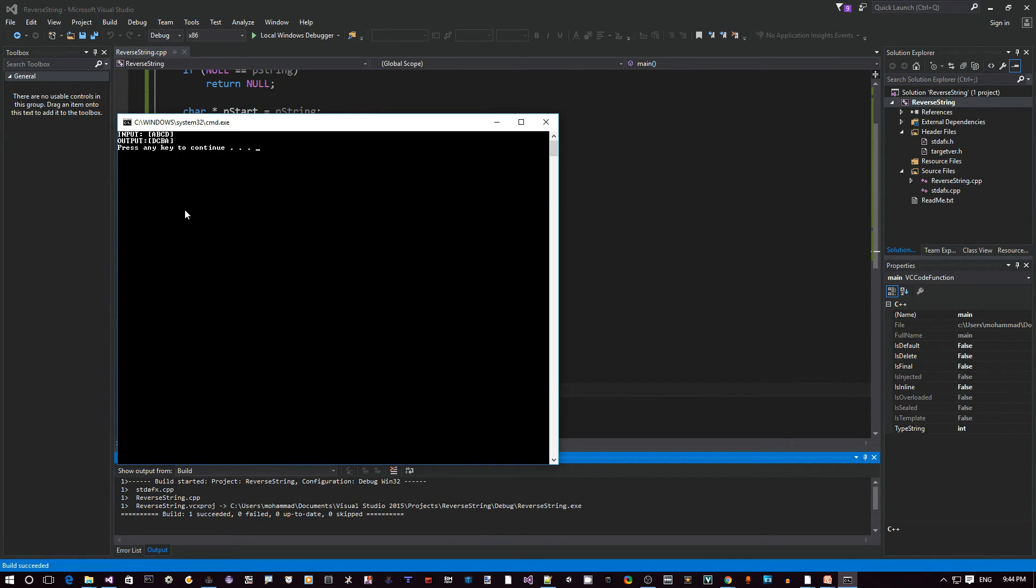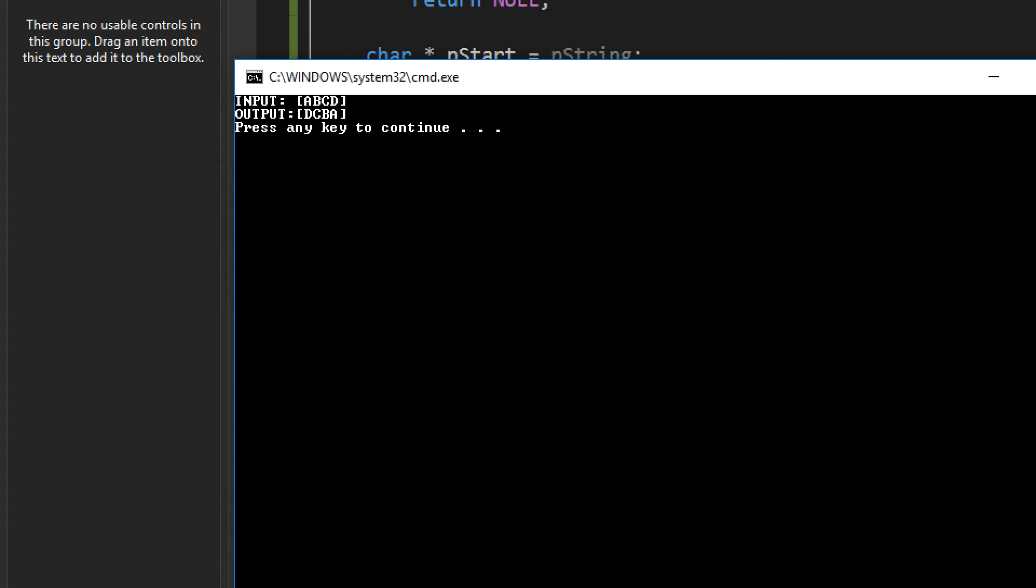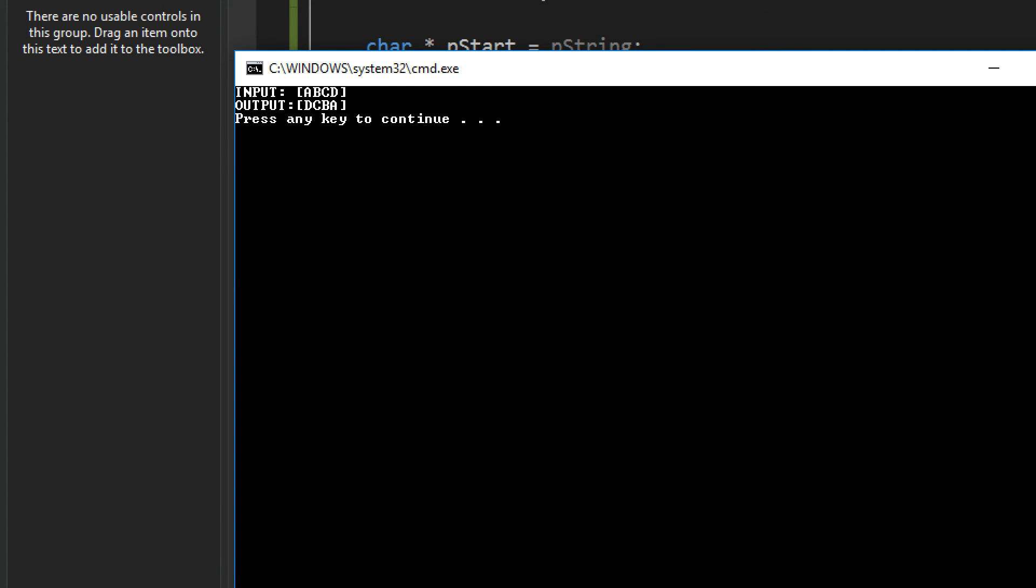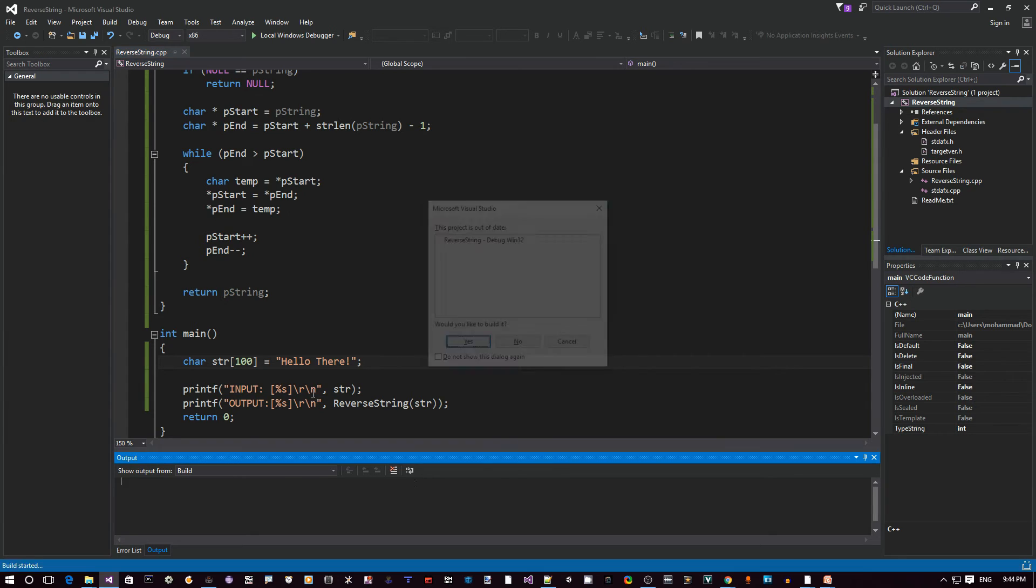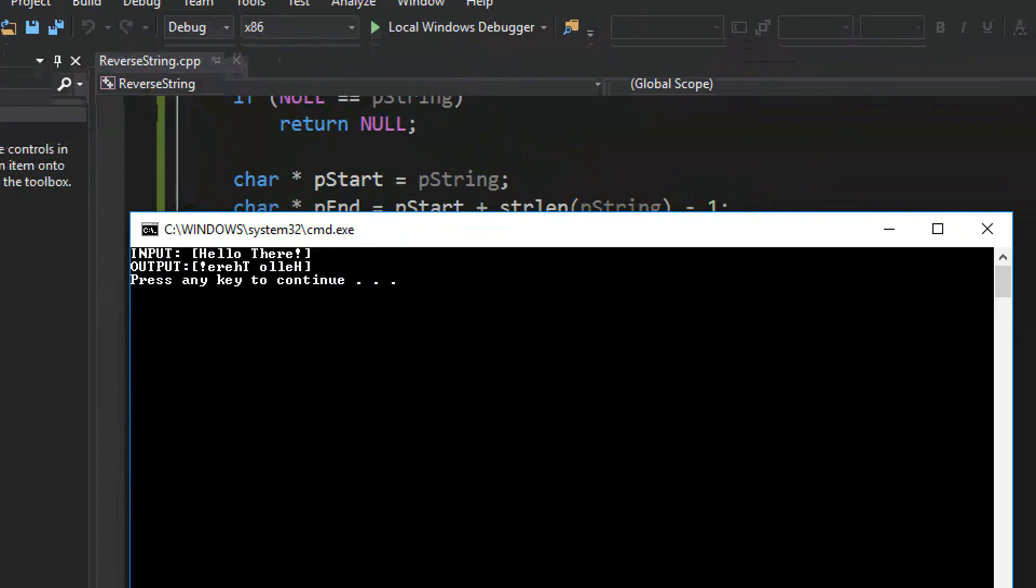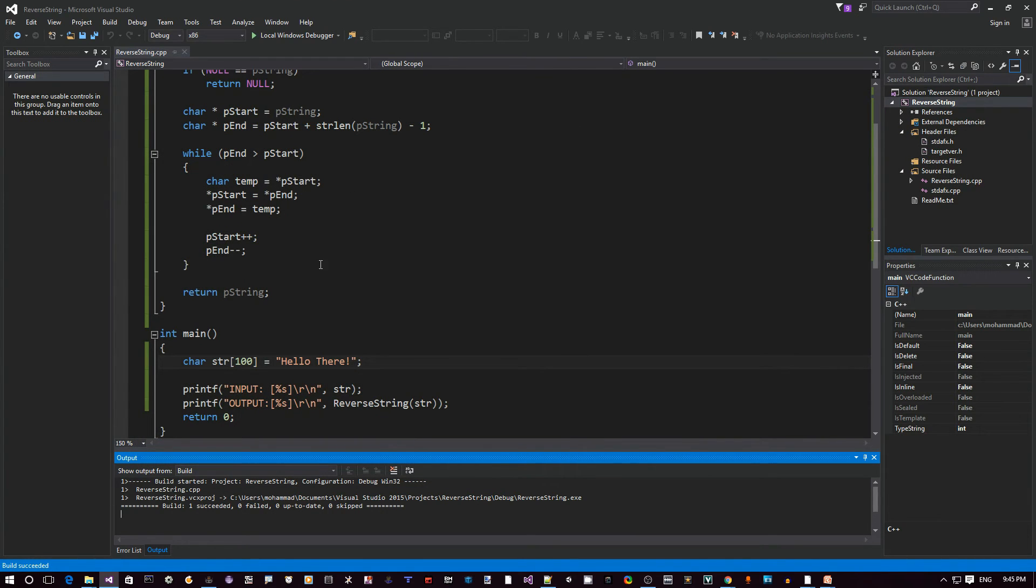Okay, let's run it. Okay, so now let me zoom in. You can see here, input is A, B, C, D, output is D, C, B, A. Okay, so all right, let's try some other string. We can try hello there. Run it. Zoom in again. So input is hello there. And then you can see the output is actually reversed. This should be it.